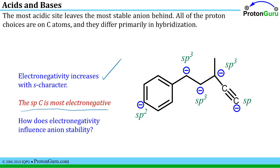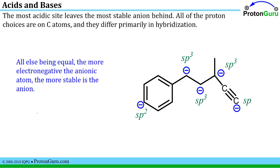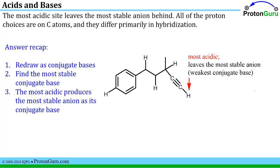Now that we know these carbons differ in electronegativity, we ask how electronegativity influences anion stability. All else being equal, the more electronegative the anionic atom, the more stable the anion. So the SP hybridized carbon produces the most stable anion and therefore the most stable conjugate base — meaning that in our starting material, that is the most acidic proton, because removing it leaves the most stable, or weakest, conjugate base behind.